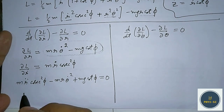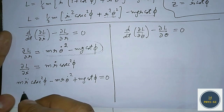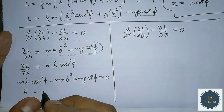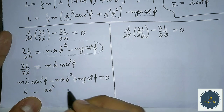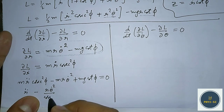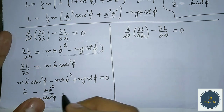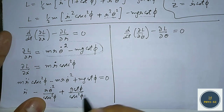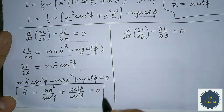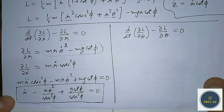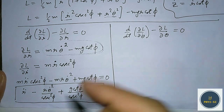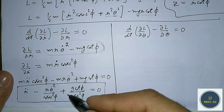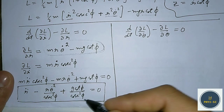Taking m out of the equation, we get: r̈ − rθ̇²·sin²φ + g·cot φ·sin²φ = 0, which can also be written as r̈ − rθ̇²·sin²φ + g·cos φ·sin φ = 0. This is the equation of motion in terms of coordinate r.